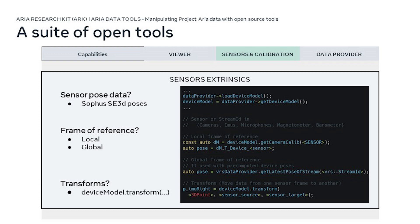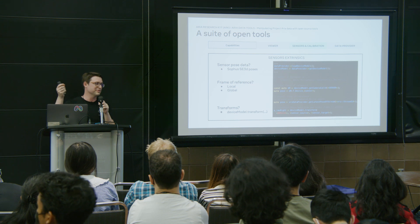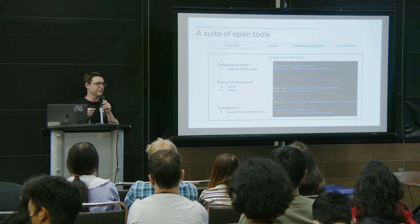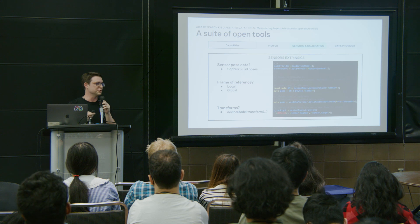For poses of the sensors, you want to query all 17 sensor poses in the same reference format. You can do a query in local or global coordinates and choose the reference frame best for your use case. And since you have many sensors like RGB cameras and SLAM cameras, you often want to transform information in 3D from one sensor to another — we have a single transform function that allows you to do that directly.